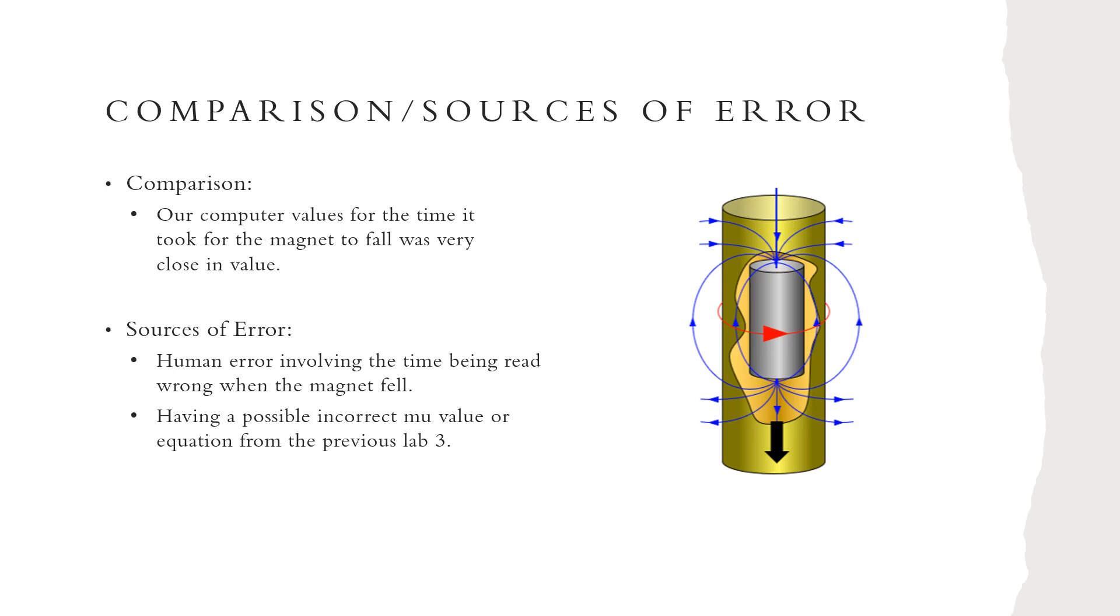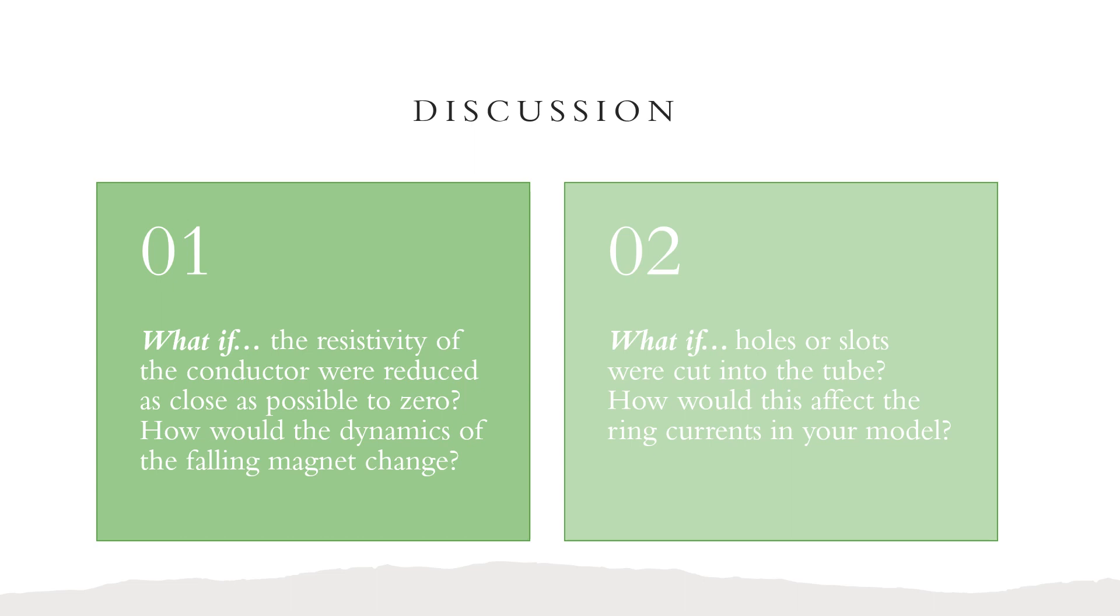For comparison, our computer values for the time it took for the magnet to fall was very close in value to the ones that we calculated by hand. Some sources of error could have been human error involving the time being read wrong when the magnet fell and having a possible incorrect mu value or equation from the previous lab 3.